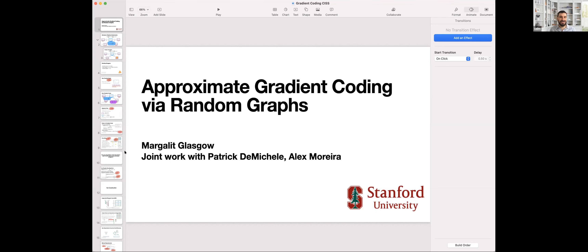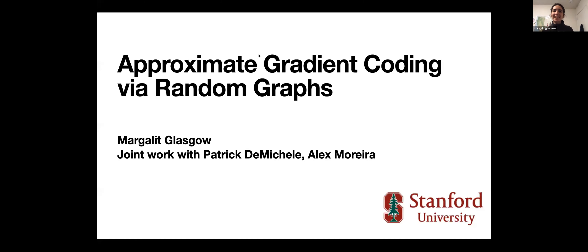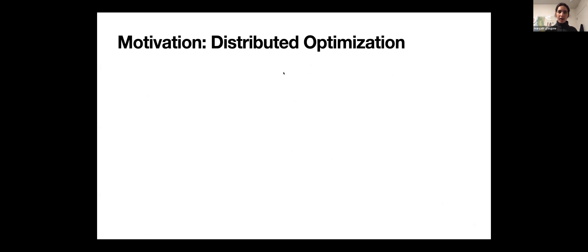Next talk is by Margalit Glasgow from Stanford. She's going to talk about approximate gradient coding via random graphs. This is joint work with two undergrads: Patrick de Michelle and Alex Moreira.